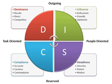Low D scores describe those who are conservative, low-keyed, cooperative, calculating, undemanding, cautious, mild, agreeable, modest, and peaceful.